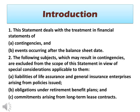Para 2. The following subjects which may result in contingencies are excluded from the scope of this statement in view of special considerations applicable to them: A. Liabilities of life assurance and general insurance enterprises arising from policies issued; B. Obligations under retirement benefit plans; and C. Commitments arising from long-term lease contracts.